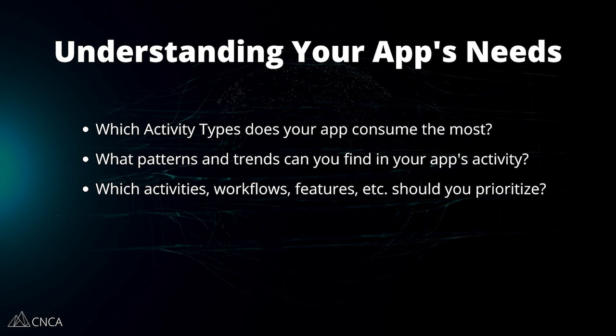What you should aim to understand is the following: which activity types make up the majority of consumption, what patterns and trends exist in your app's activity — especially if it's mostly driven by user behavior compared to fixed automations — and what you can find from that to better predict the future. Where do you want to place your priorities? For example, keeping a complex, expensive workflow may be worth the higher cost if it's serving a vital core function and has little room for reworking. The more predictable your activity is, the more you can focus your optimization efforts on the right areas and choose the best plan to fit your needs.